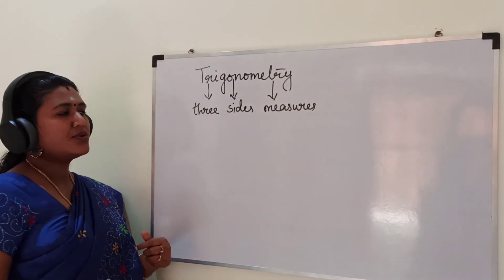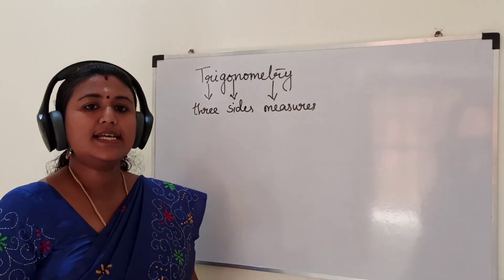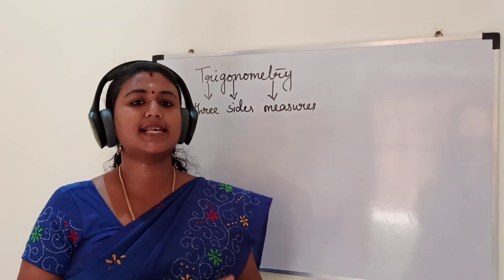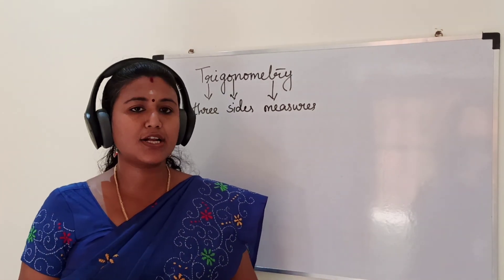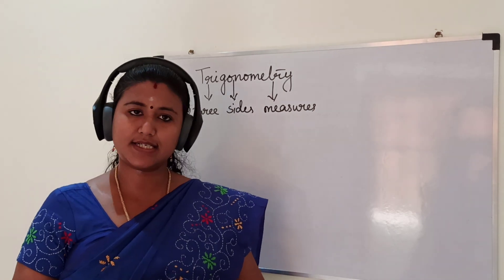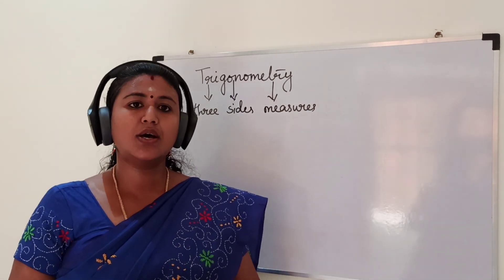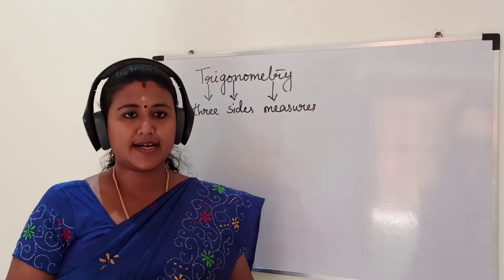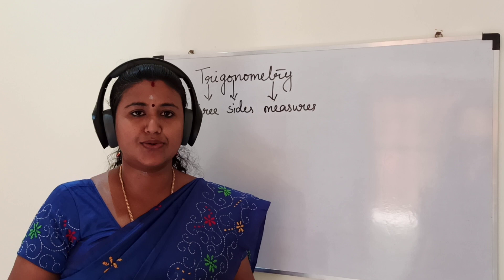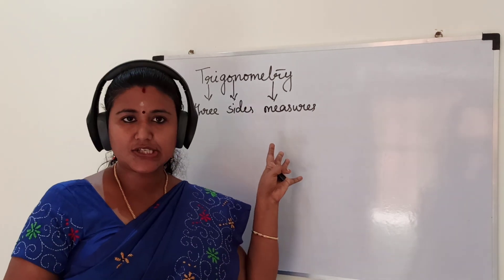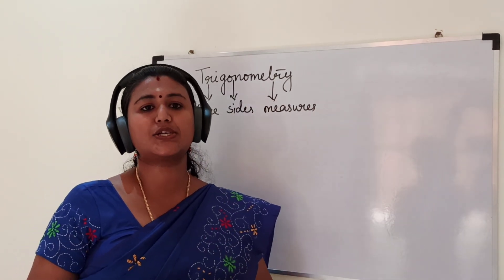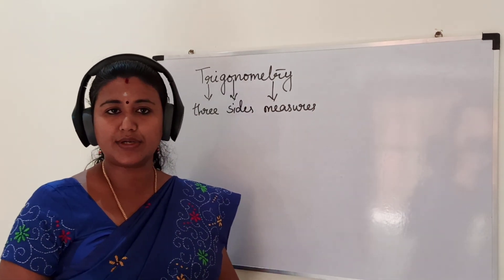So trigonometry is the study of the relationship between the sides and angles of a triangle, particularly right-angled triangles. Now we will study the trigonometric ratios of the sides of a right angle triangle with respect to the acute angle.